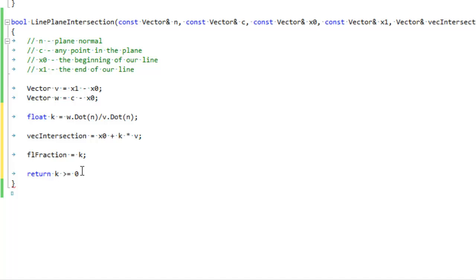So we want k to be greater than or equal to zero. And if our line segment is facing towards the plane but the plane is too far away, then k will be bigger than one. So we want k to be less than or equal to one. That's it.